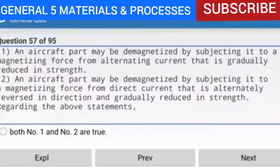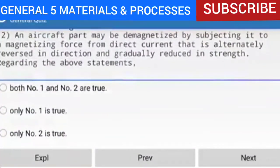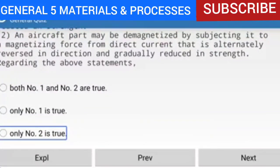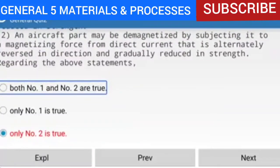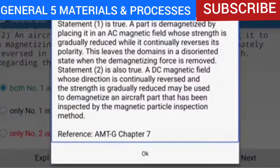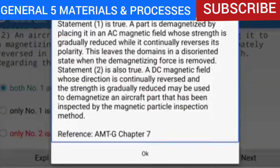Question 57 of 95: Statement 1 — an aircraft part may be demagnetized by subjecting it to a magnetizing force from alternating current that is gradually reduced in strength. Statement 2 — an aircraft part may be demagnetized by subjecting it to a magnetizing force from direct current that is alternately reversed in direction and gradually reduced in strength. Both statements 1 and 2 are true. A DC magnetic field whose direction is continually reversed and gradually reduced may also be used to demagnetize an aircraft part inspected by the magnetic particle method.